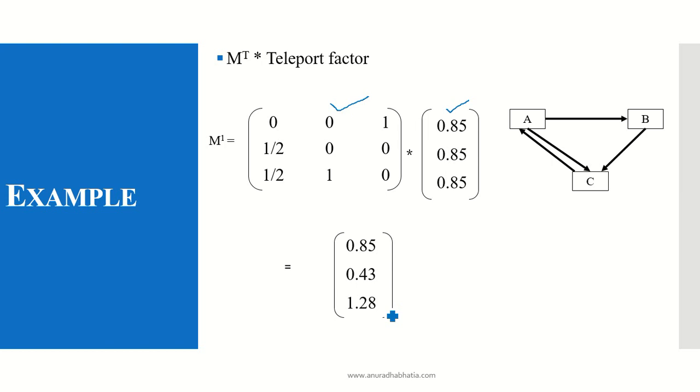How did we get this? It is 0 into 0.85, 0 into 0.85 plus 1 into 0.85, so I get 0.85. Half into 0.85, so I get 0.43. Half into 0.85 plus 1 into 0.85, so I get 1.28. You will see the difference in the values of the page ranks which are calculated over here from the equation that we had got.